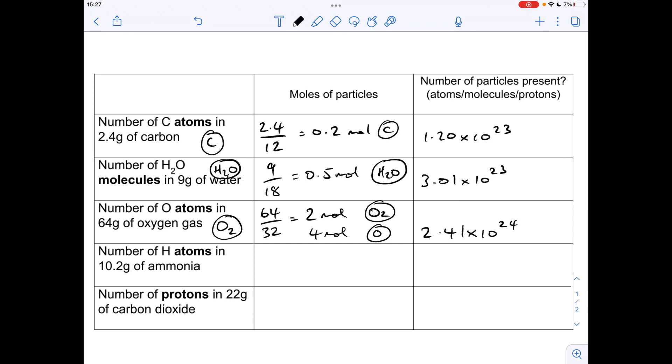Fourth one, number of hydrogen atoms in 10.2 grams of ammonia. Well ammonia goes around as the NH3 molecule. So we'll need to find out the number of moles of that first. Mass over MR, 10.2 over 17. So that comes out at 0.6 moles of NH3 molecules.